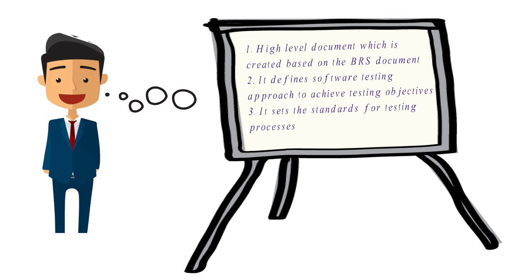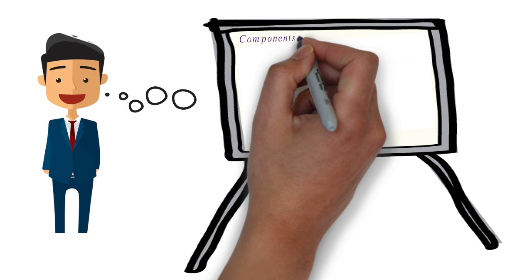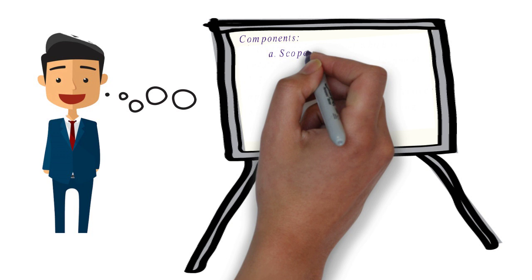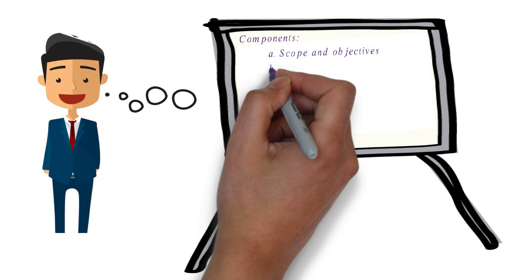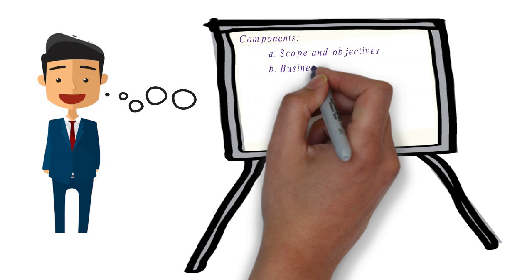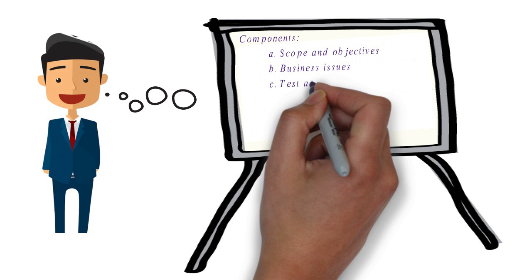There can be many components for a test strategy document. The first component is objective. The next component is scope of the project, which defines the systems under test — what systems we are going to perform testing on. The next component is business issues. There can be lots of issues which stand as a blocker for the project, and all these issues need to be sorted out prior to the project start. It can be the right set of resources or the network setup required for the project.